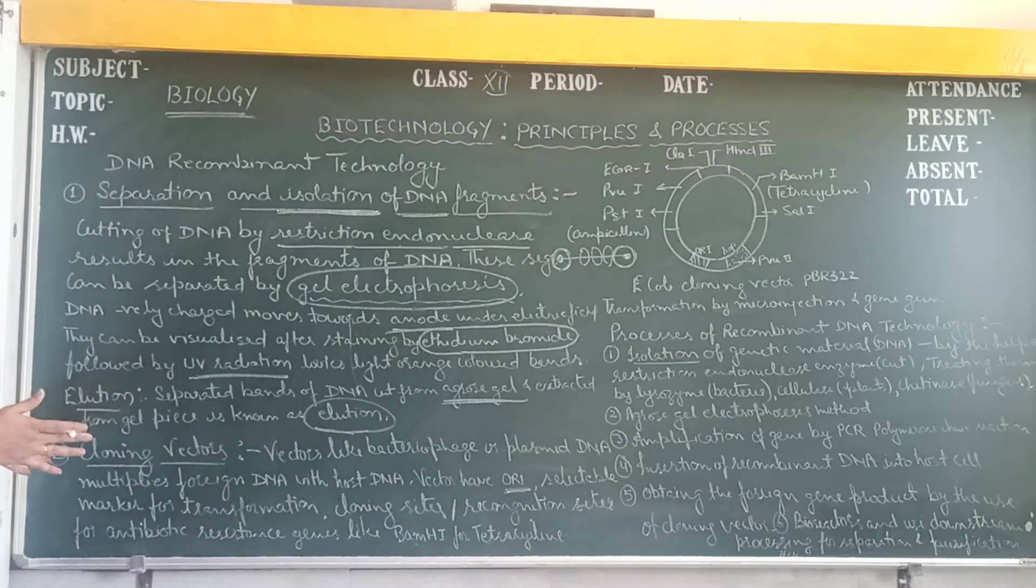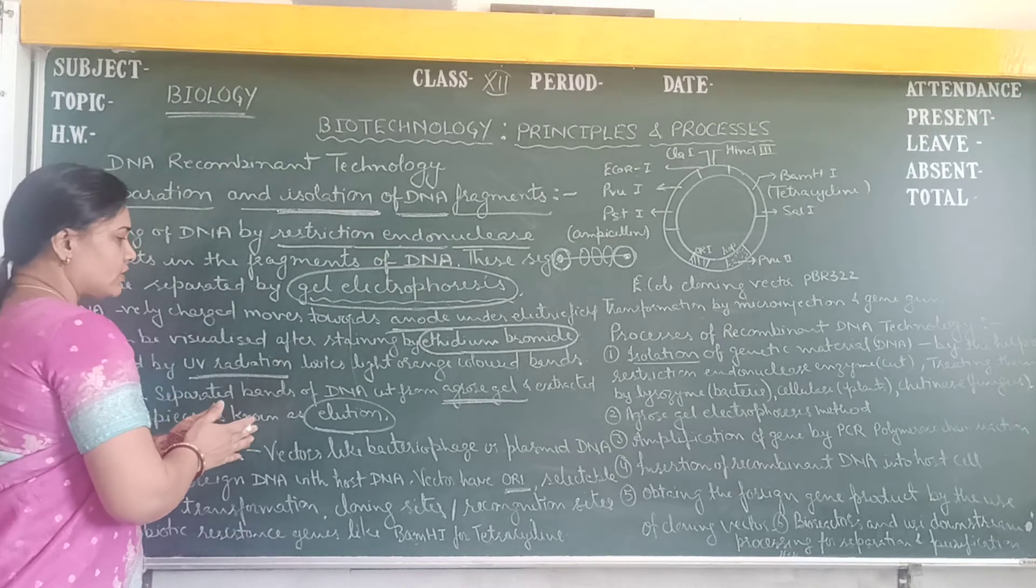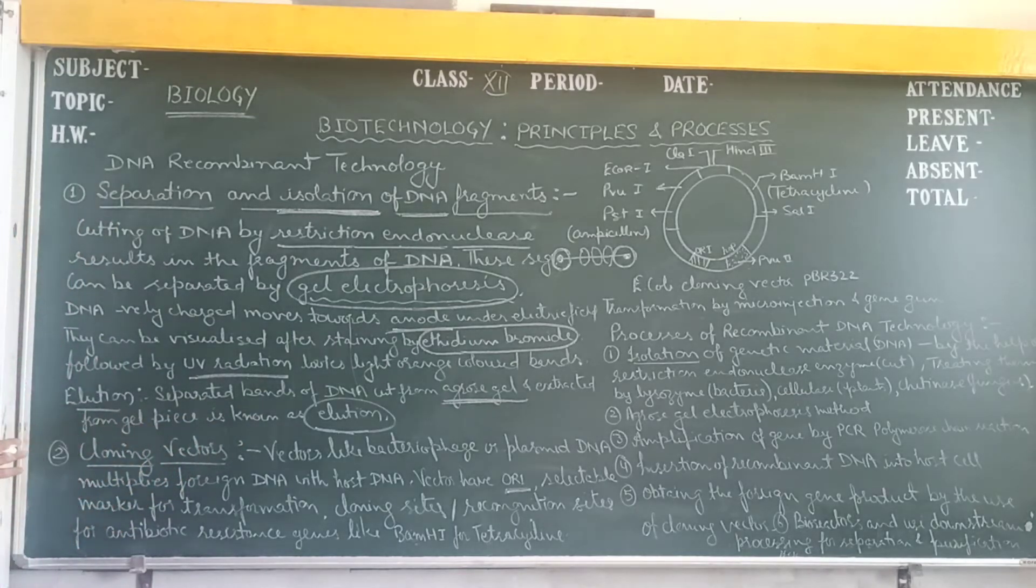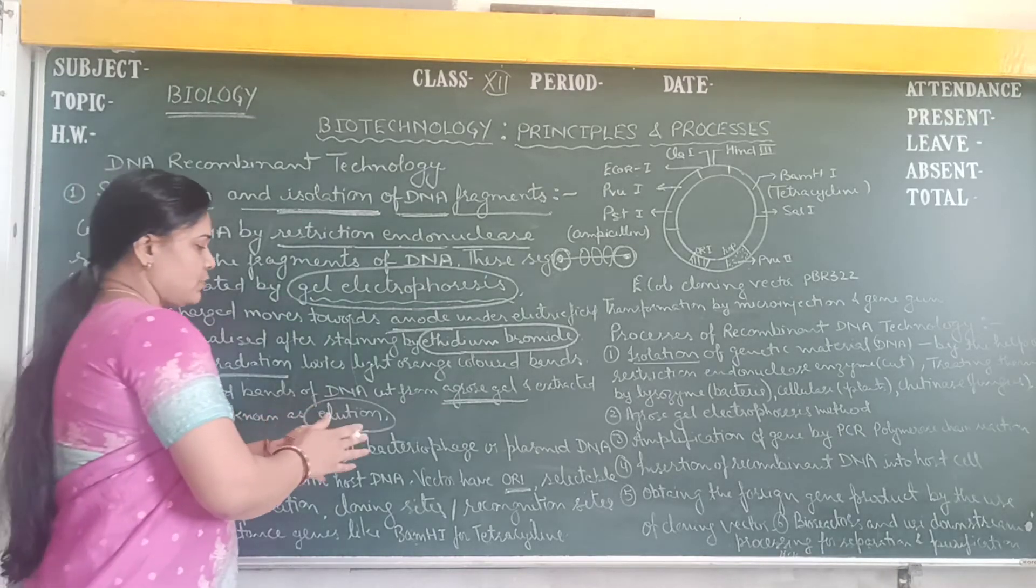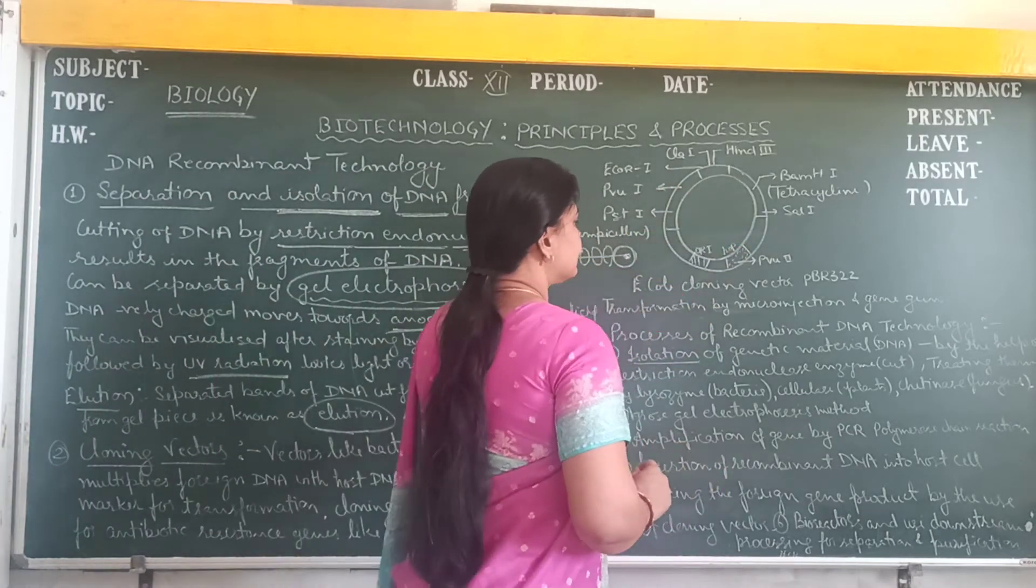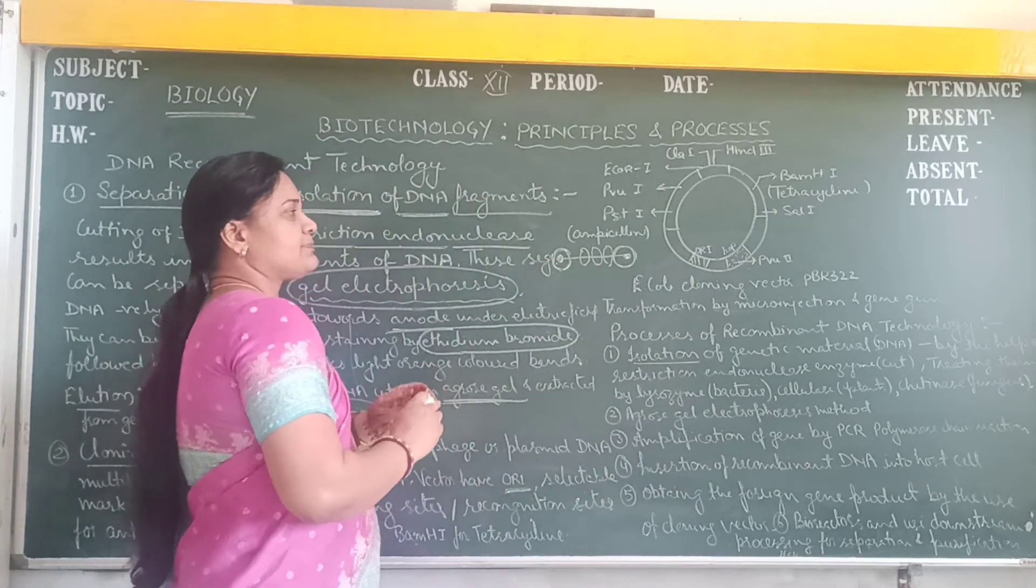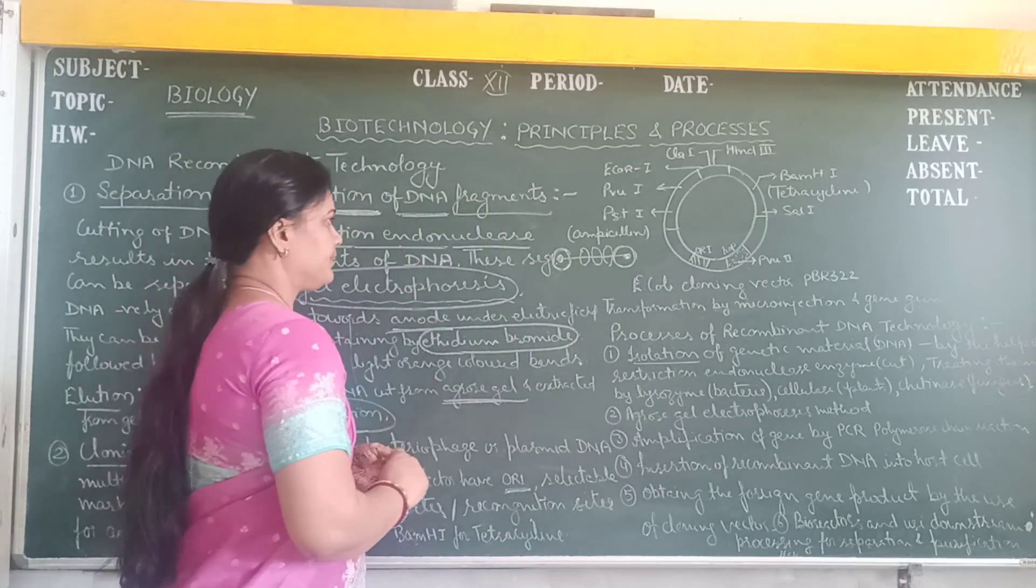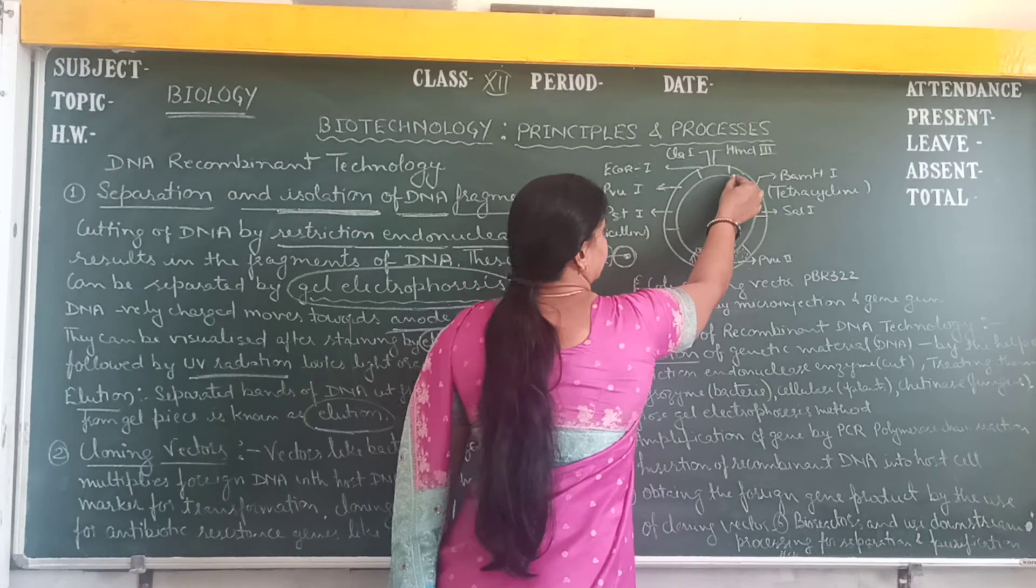The second one is selectable marker. Selectable markers are necessary for the transformation process. And cloning sites, or recognition sites you can say, like antibiotic resistance genes: BamHI for tetracycline. Here is the vector DNA, like E. coli, for the vector that is PBR 322.